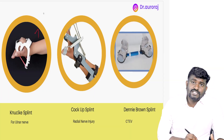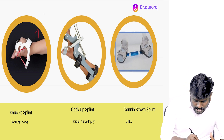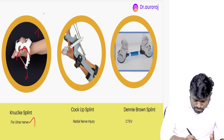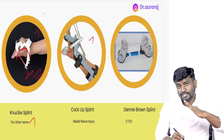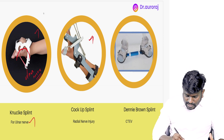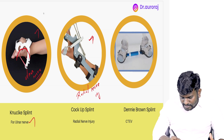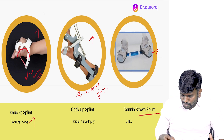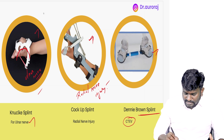This splint is called a knuckle splint — remember knuckle has a U. It is due to ulnar nerve injury. This image over here is going to be a cock-up splint, and cock-up splint is due to radial nerve injury. And this is going to be a Denny Brown splint, which is due to congenital talipes equinovarus. Please revise these three images.